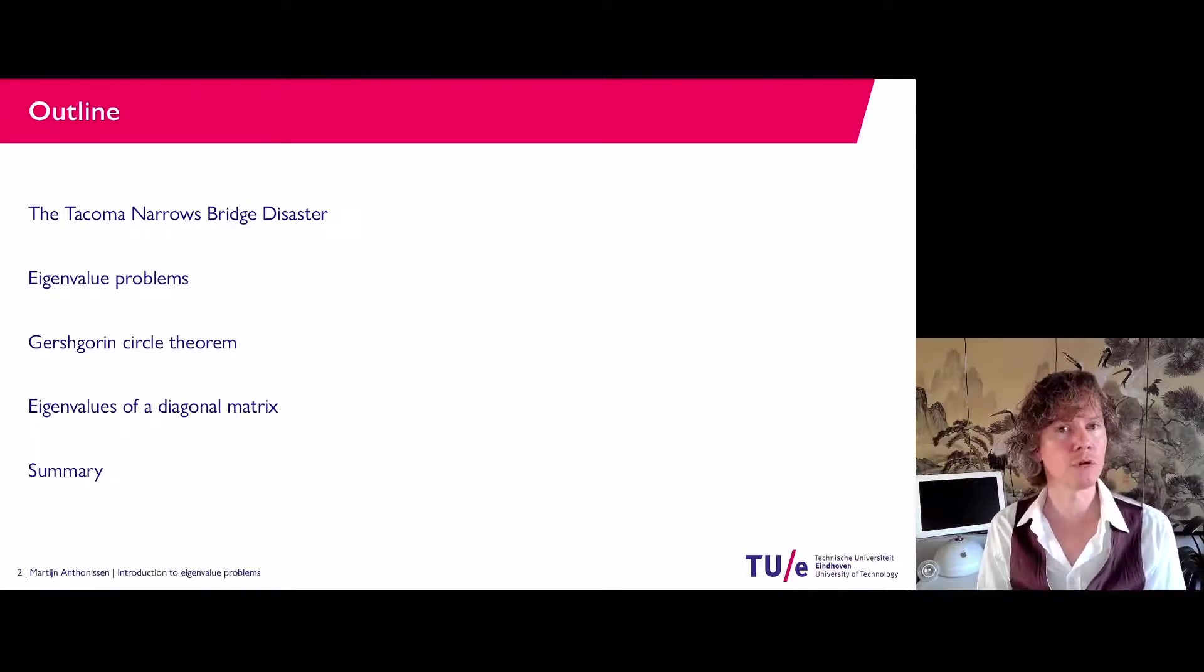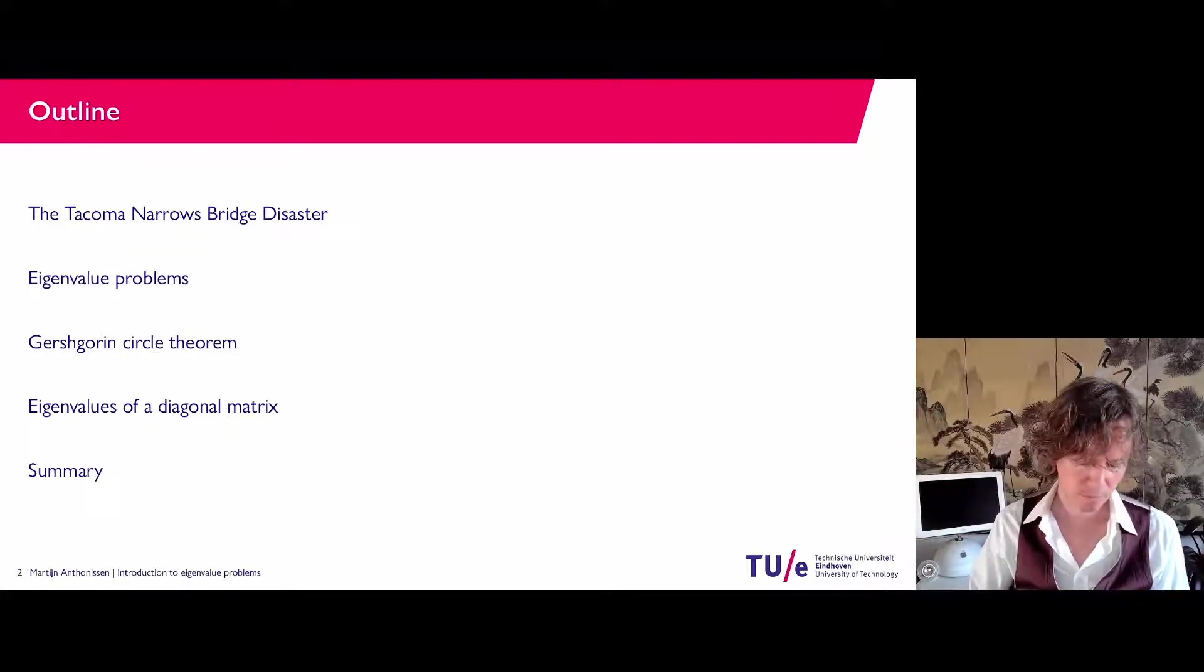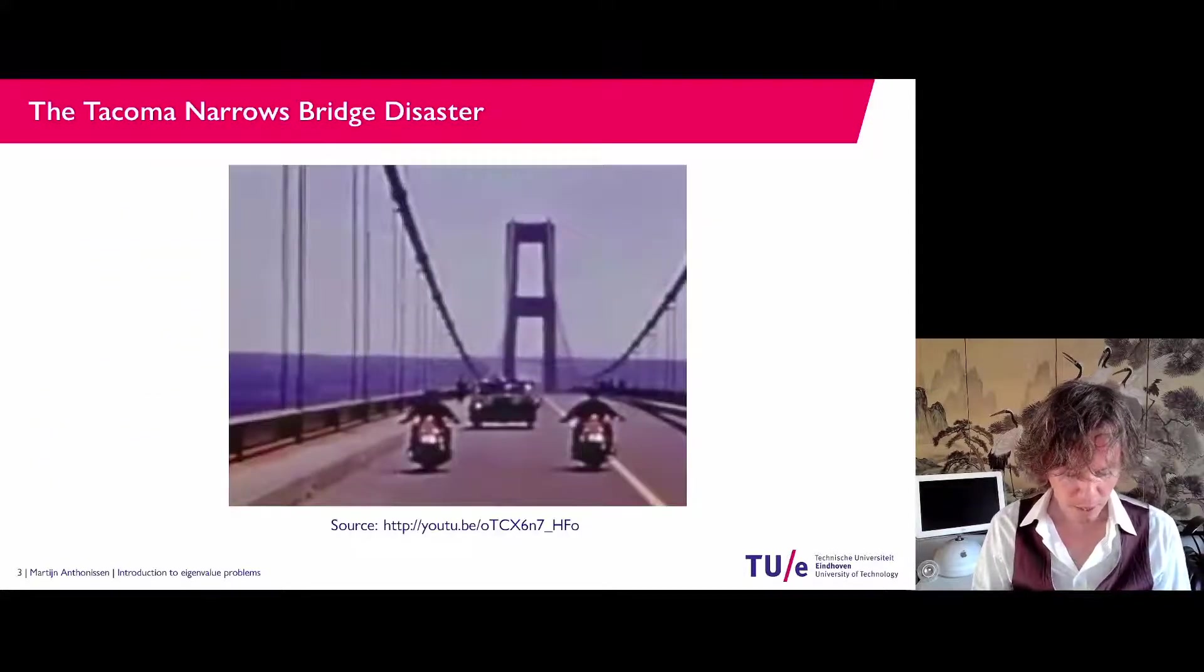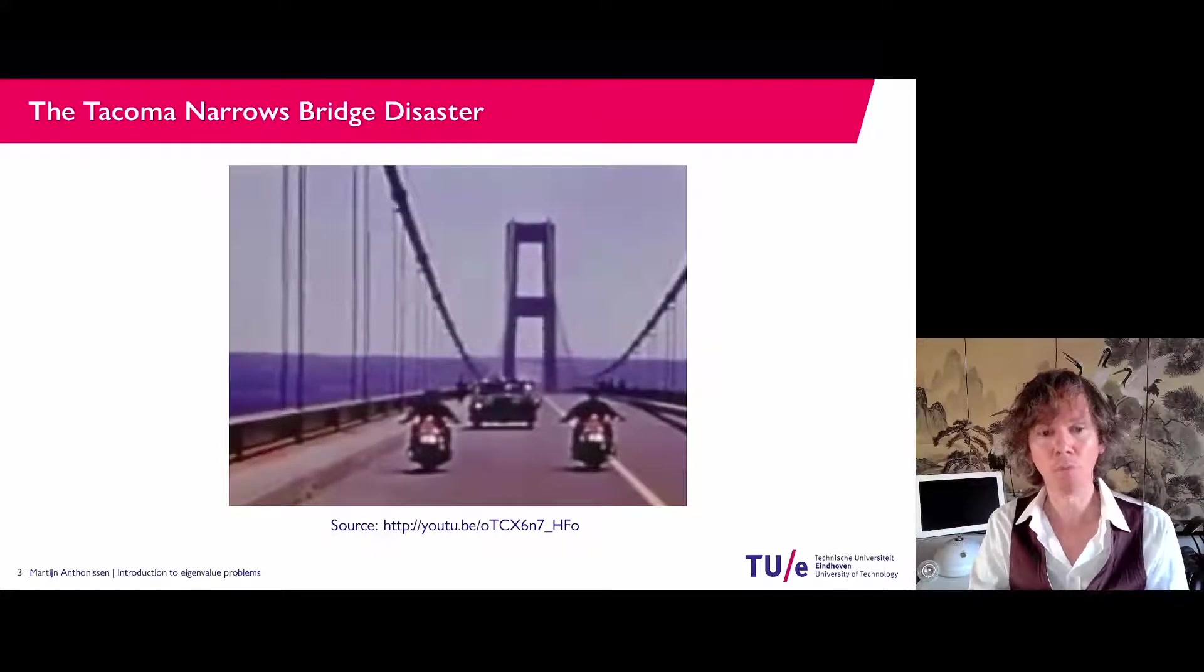So if you just have the matrix, can you in advance in a simple way already say something about the location of the eigenvalues in the complex plane? Because in general, even for a real matrix, we will have complex eigenvalues. First of all, I would normally show this video, but here is a link to YouTube. So pause this video and watch the video that I have linked to here.